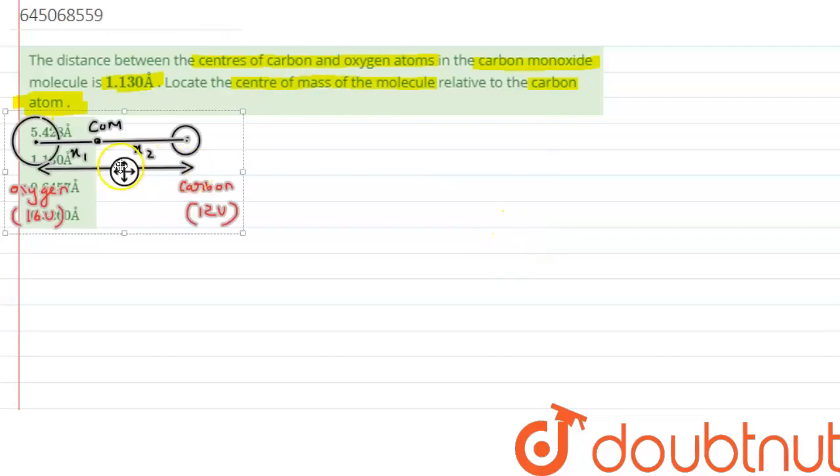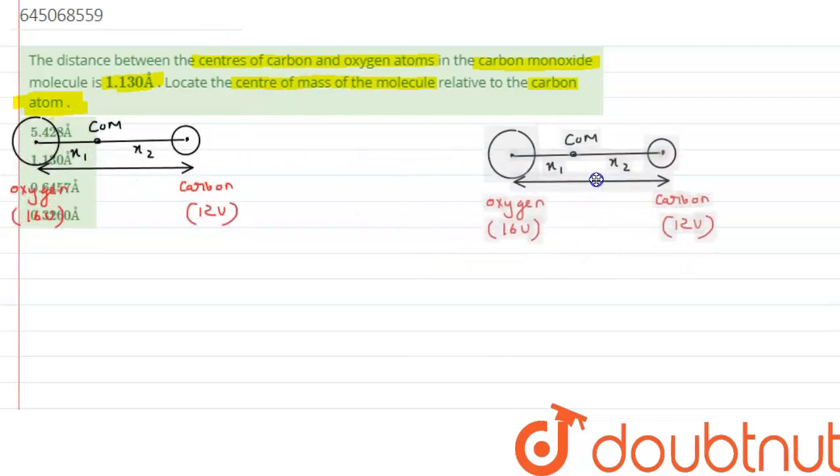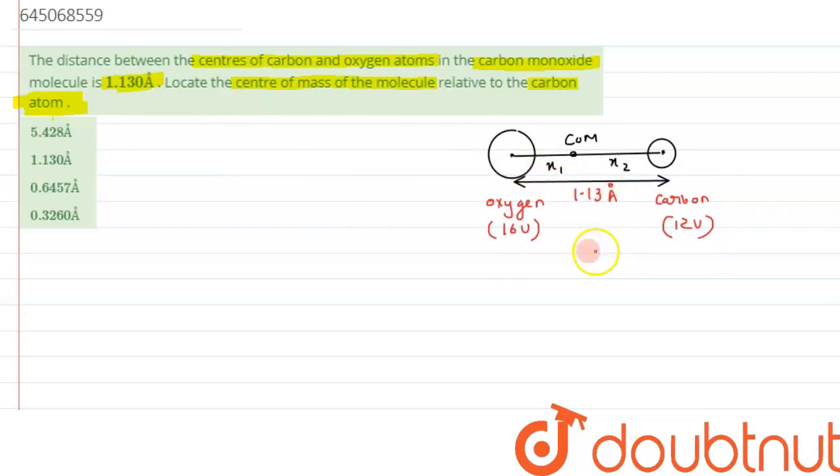So as we can see, there is one oxygen atom and one carbon atom which has been separated. The distance has been given as 1.13 angstrom. We know the center of mass is located near the heavier mass, so it will be nearer to the oxygen atom. Let's suppose that we have assumed from oxygen atom it is at x1 distance and from carbon it is x2 distance.